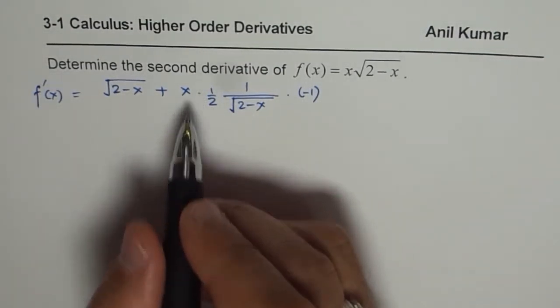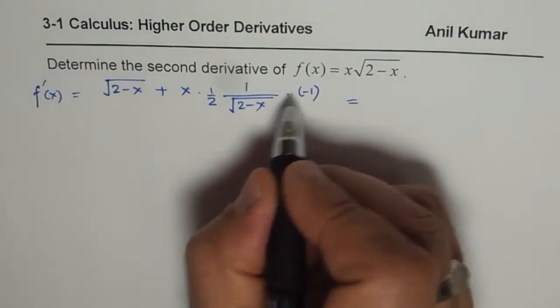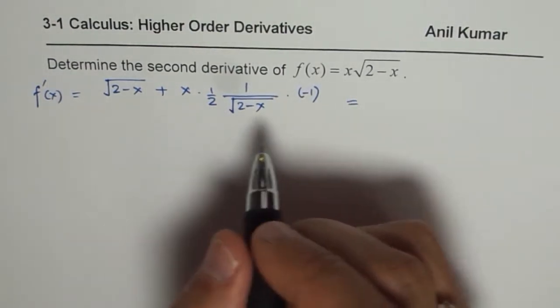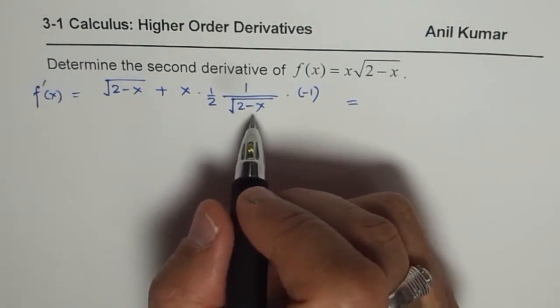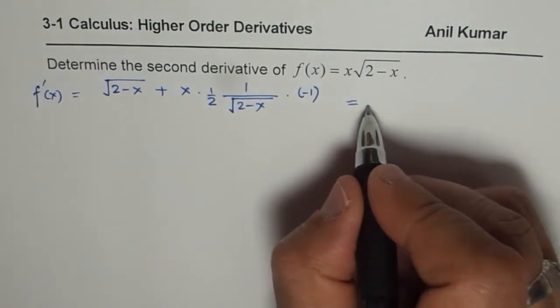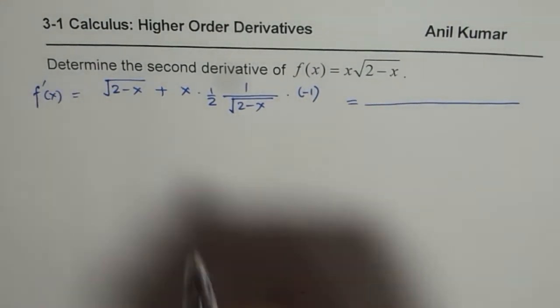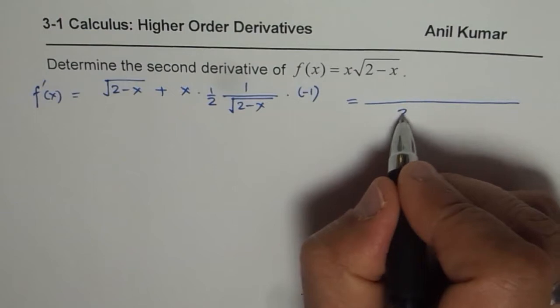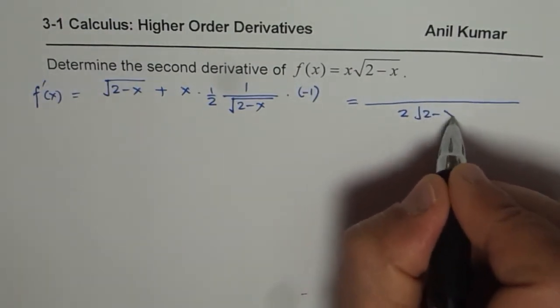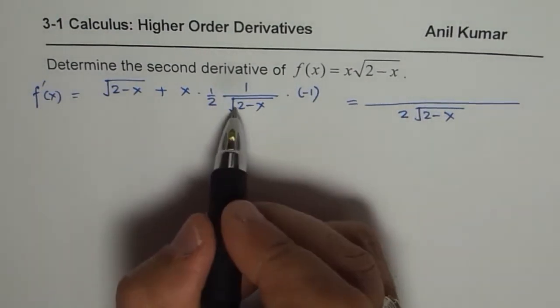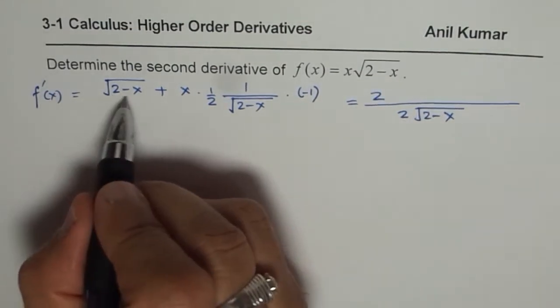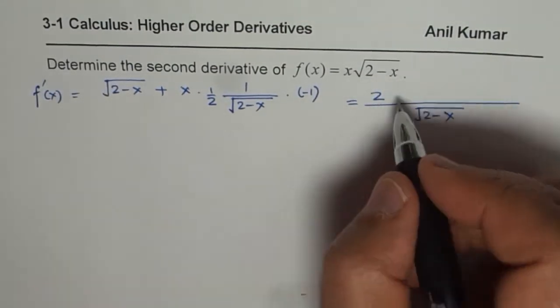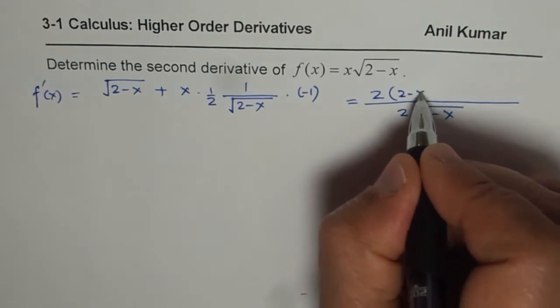We can now simplify this a bit, let me rewrite this with minus sign. We can take this common denominator, 2 times square root of 2 minus x. When you multiply here, you get 2 times this function which becomes 2 minus x, and here we get minus x.